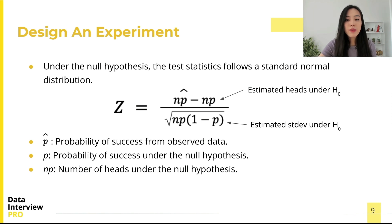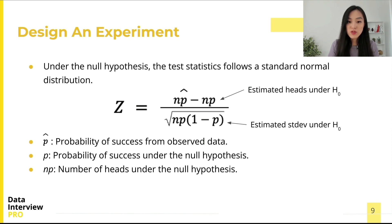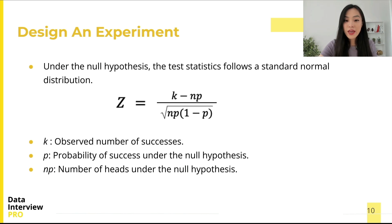The probability of success p represents the probability of success under the null hypothesis, so n multiplied by p is the number of heads under the null hypothesis. In the denominator we have the standard deviation of the binomial distribution. We can also use k to denote the observed number of successes, where k is the same as n multiplied by p-hat.